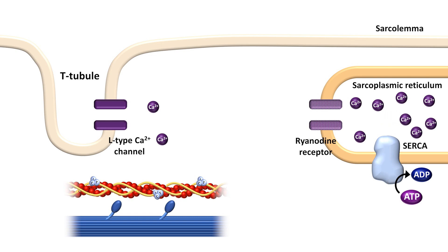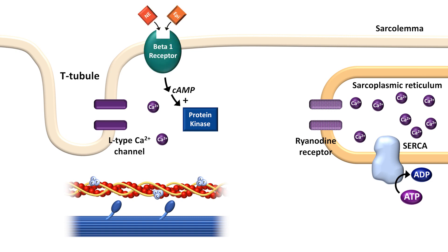Another important component of the regulation of the system involves a cyclic AMP-dependent protein kinase whose activity is increased by catecholamines like norepinephrine binding to beta receptors on the cell membrane. Actions of the protein kinase include increasing the conductance of the L-type calcium channels, phosphorylation of troponin I, which modulates its interaction with troponin C, with downstream effects on the kinetics of the actin-myosin interaction.